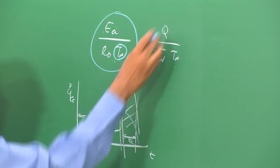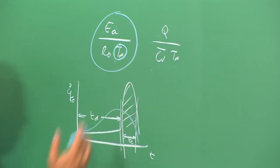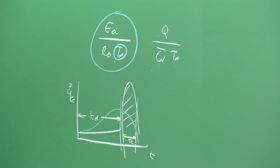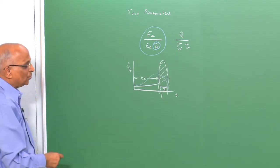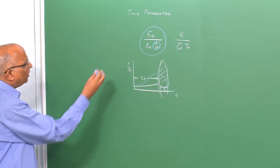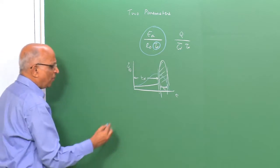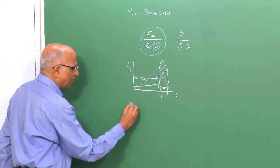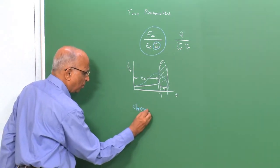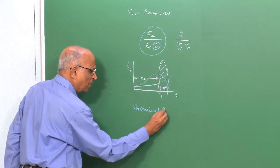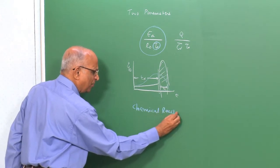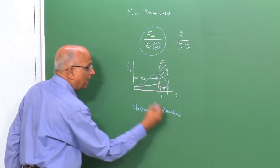The second non-dimensional parameter tells us the magnitude of heat release relative to the initial internal energy of the medium. If there is more energy release, an explosion is capable of forming a strong blast wave. Today we will try to apply this for one typical case so we know how to use these two parameters in practice.